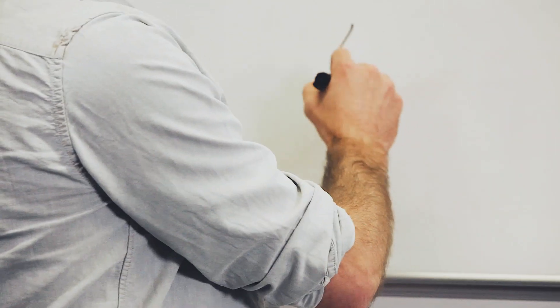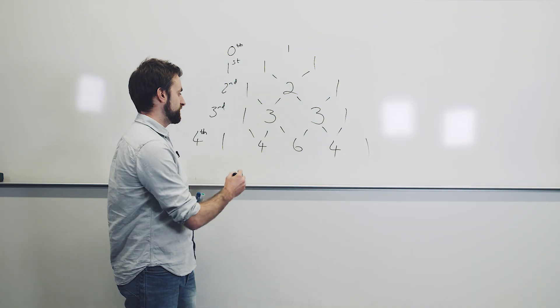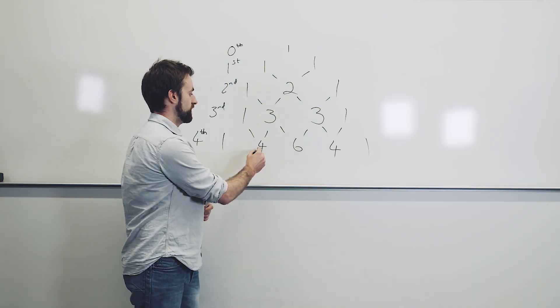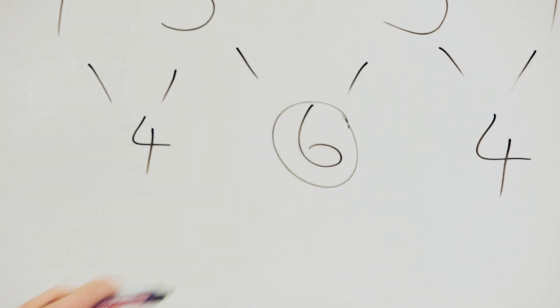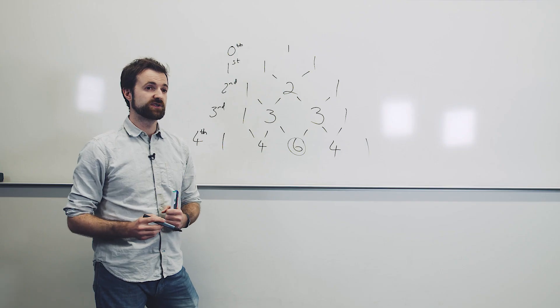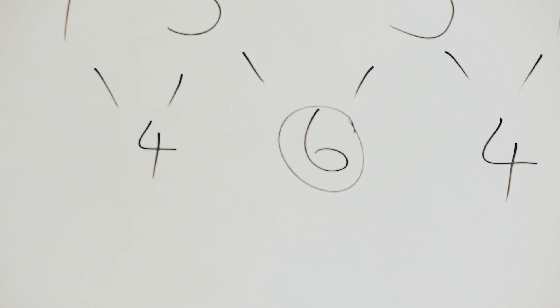And these binomial coefficients can be simply read off from the relevant row of Pascal's triangle. So if I'm looking at four people, then I look at the fourth row. I look at the second element that isn't a one, so this is the first element, this is the second element, the six. And the six tells me that there are six ways of choosing two people from a larger group of four.